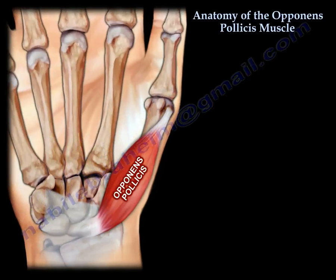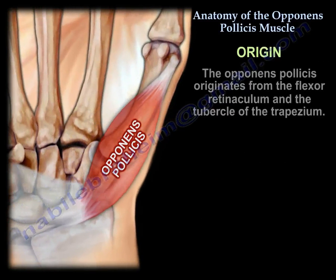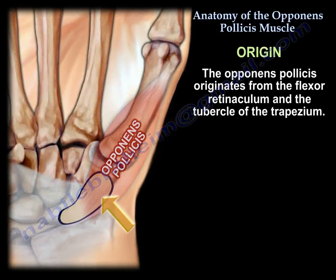Origin of the muscle: the opponens pollicis originates from the flexor retinaculum and the tubercle of the trapezium.